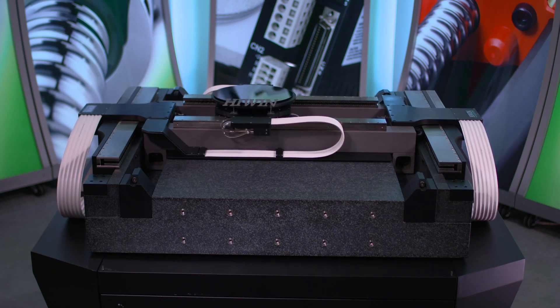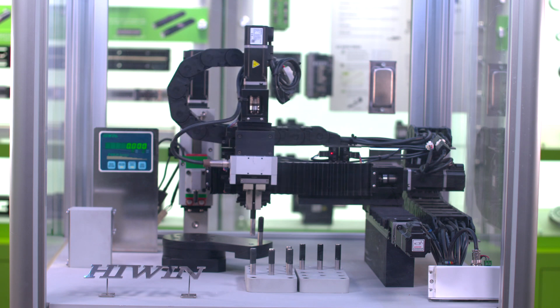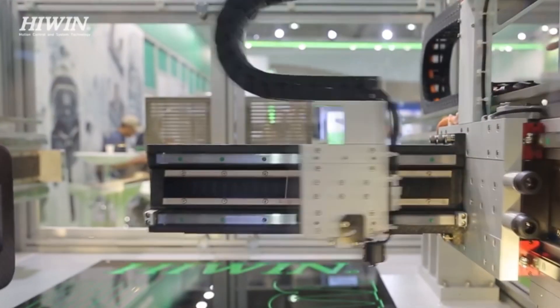Hiwin Corporation is a leader in high-precision linear and rotational motion technologies used in building machines for manufacturing automation and scientific test equipment.